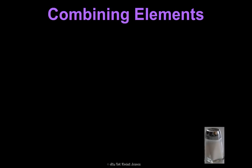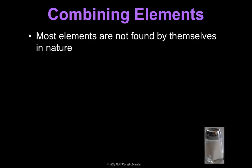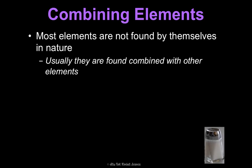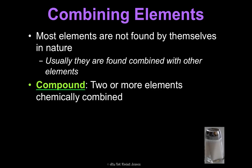Let's talk about elements and combining. Most elements on the periodic table are not found just by themselves in nature. Of course some are, but usually they're found combined with other elements. And so we call that a compound — that is when two or more elements are chemically combined, and that should be a familiar term from our matter unit.